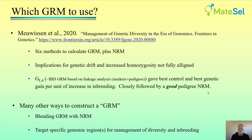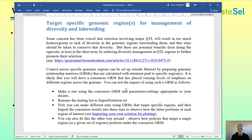GLA was closely followed by a good pedigree NRM — where the pedigree is complete and for a good number of generations, which we may not have in practice. There are many other ways to construct a GRM: apart from the fundamental components, we can use the GRM blended with the NRM, or we can modify the NRM to target specific genomic regions for management of diversity and inbreeding. In the manual, there's a suggestion about how to make the balance across different regions using a consensus GRM, which you can import into runs targeting specific regions.